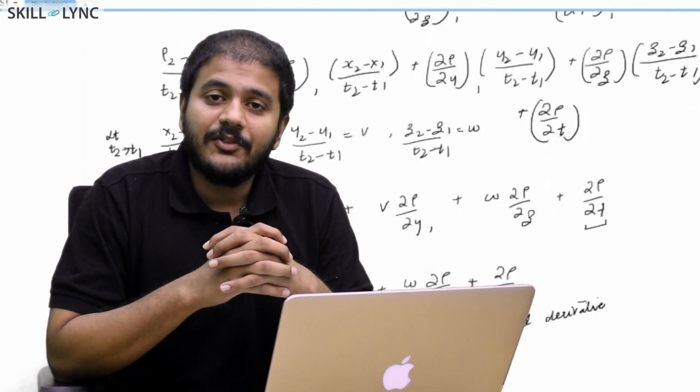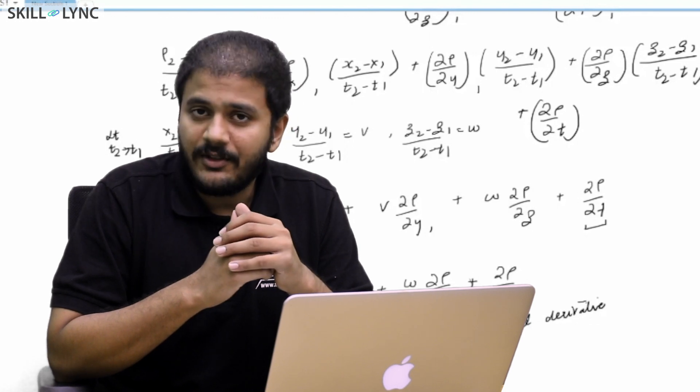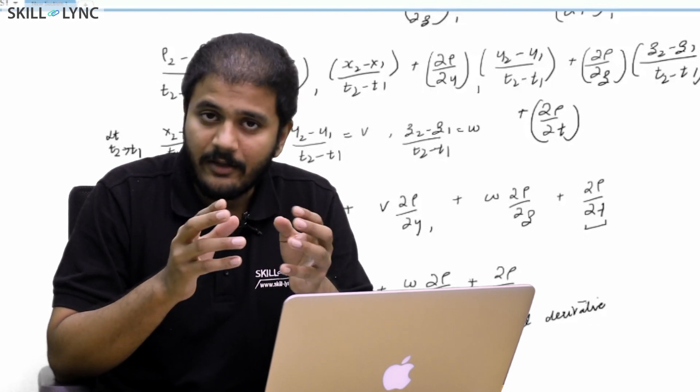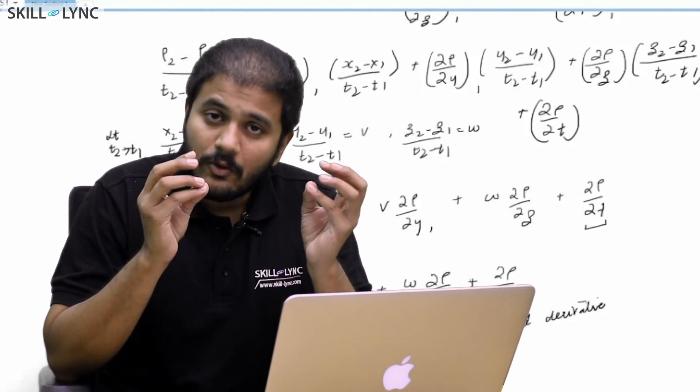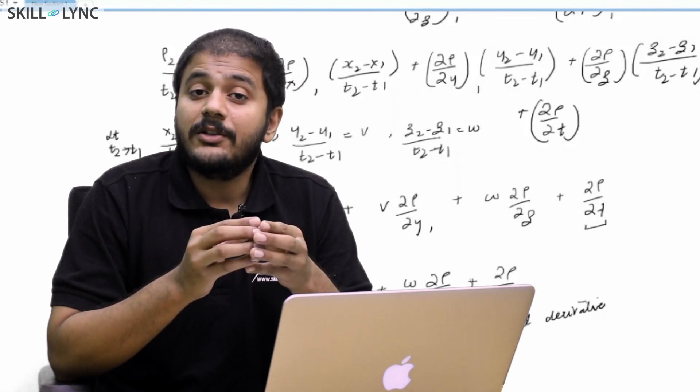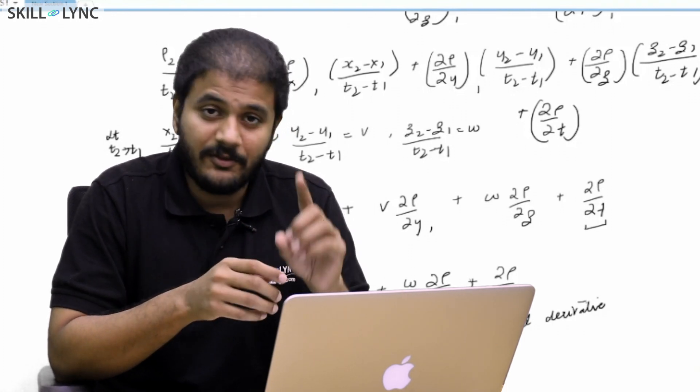As far as time derivatives are concerned, there are two terminologies in CFD. One is a local time derivative where you're basically following the fluid by putting a reference frame on the fluid itself. This is one definition.